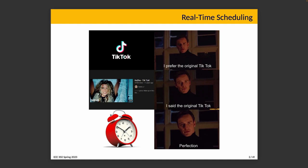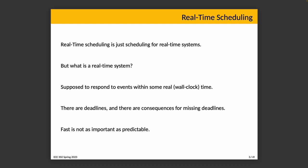Deadlines only mean something if there are consequences for missing them — if there are no consequences, what's the purpose? So deadlines are an important part of understanding real-time scheduling. Real-time systems don't necessarily behave the ways we would normally expect. Usually we want things to be fast, but for a real-time system, fast isn't necessarily desirable — predictability is what matters.